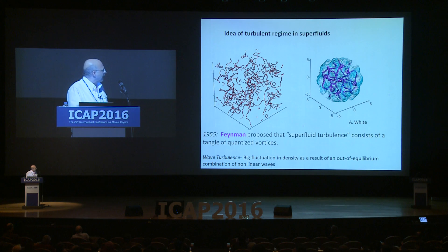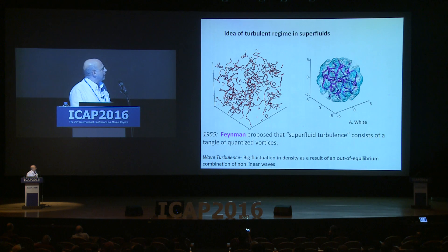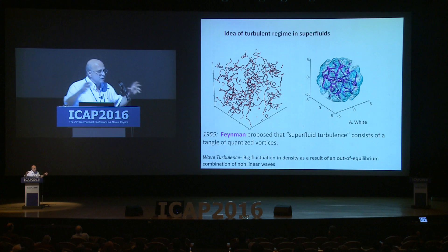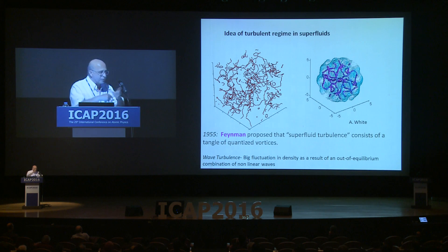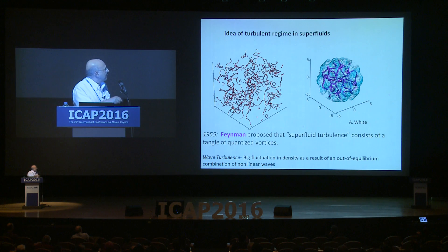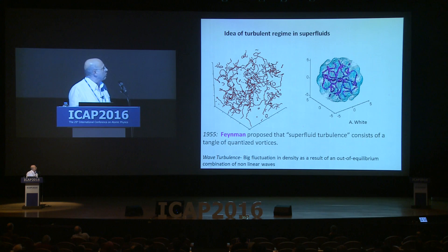The name 'quantum turbulence' is very debatable — some people like it, some don't. This was predicted long ago by Feynman in helium. When you produce this configuration with many vortex filaments and they interact with each other, they react, produce rings and oscillations. This very disordered system is what we call quantum turbulence.